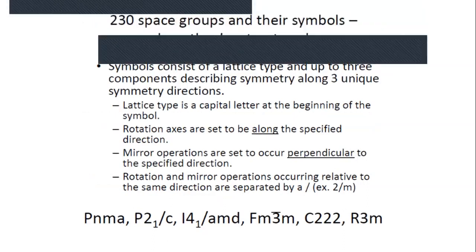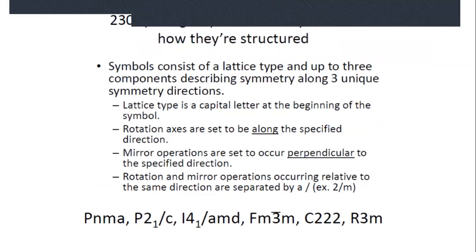How do we interpret space group symbols? The space group symbol consists of the lattice type first—either primitive (P), side-centered (C), body-centered (I), or face-centered (F)—followed by the symmetry along the three unique symmetry directions. You'll always see a capital letter first signifying the type of centering. Rotation axes are set along a particular direction; mirror operations are perpendicular to that direction. When a rotation and mirror operation share the same axis, they're written with a slash.